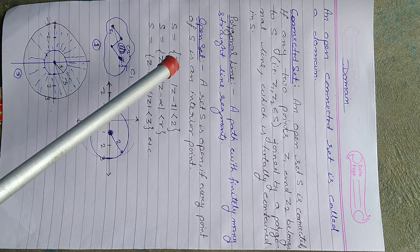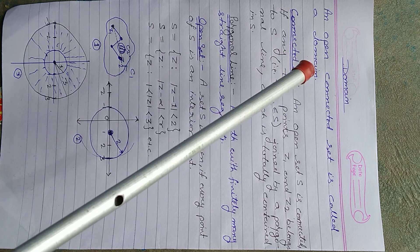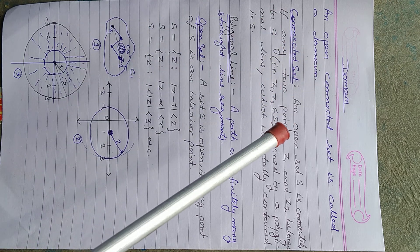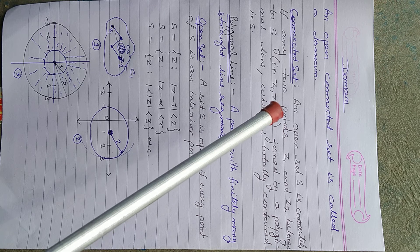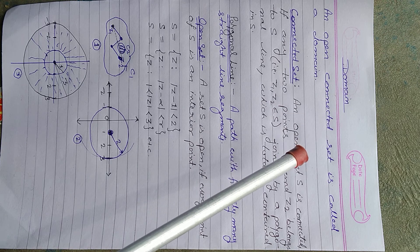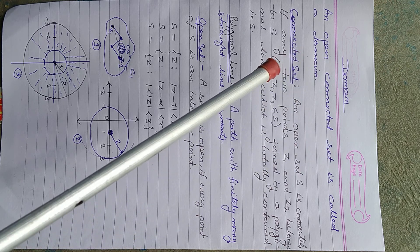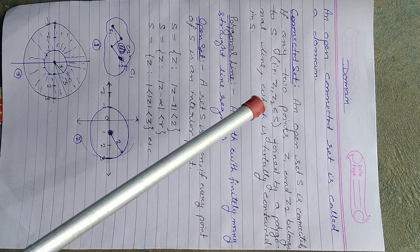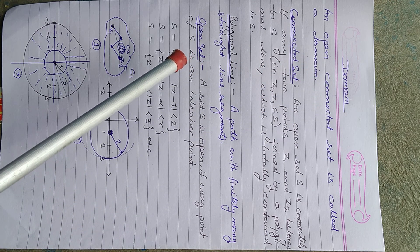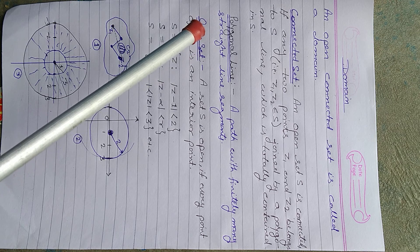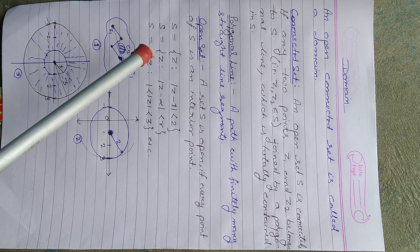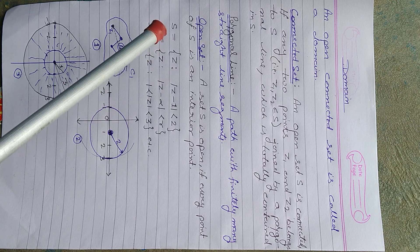Finally, the complete definition of domain is: an open connected set is known as a domain. We can understand the definition of domain with the help of the definition of connected set, the definition of polygonal line, and the definition of open set. These are the definitions used in every topic in our video lectures. Thank you.